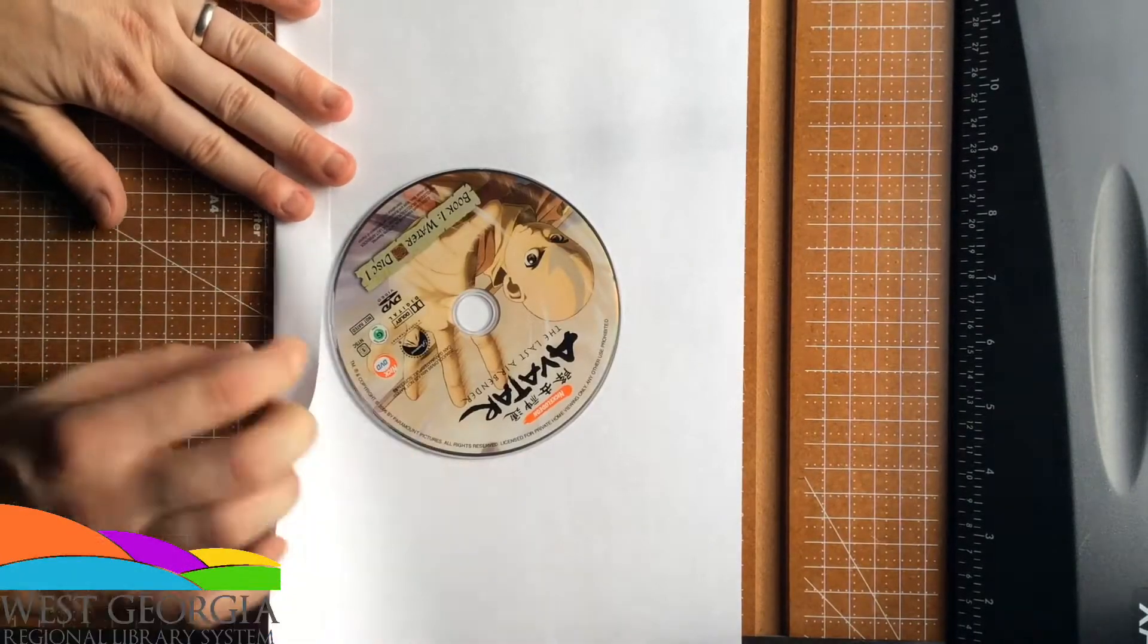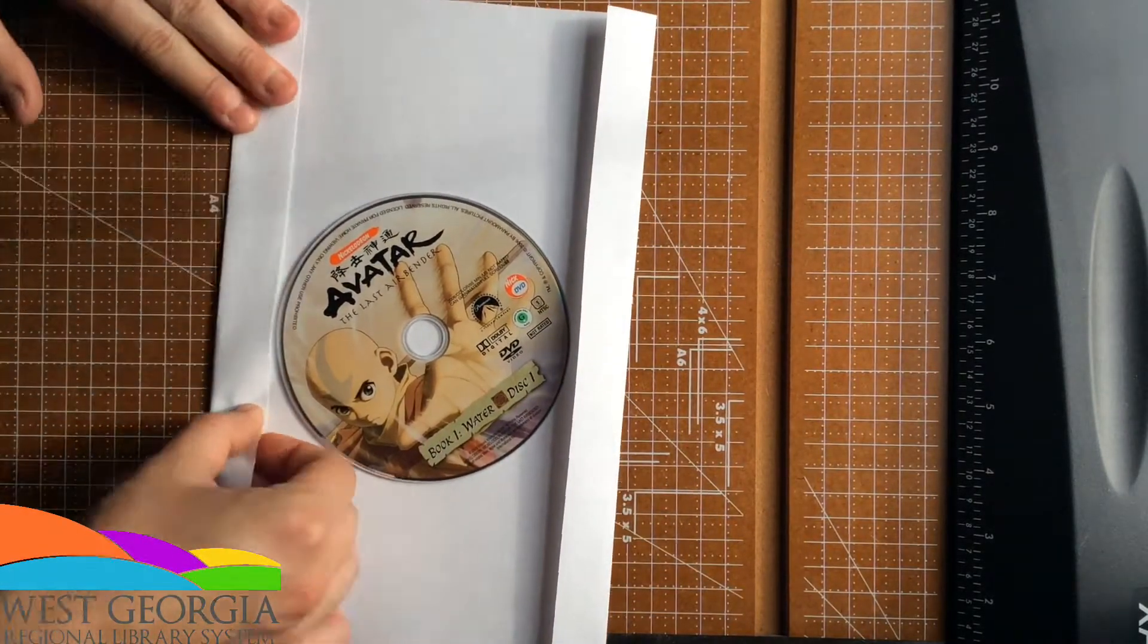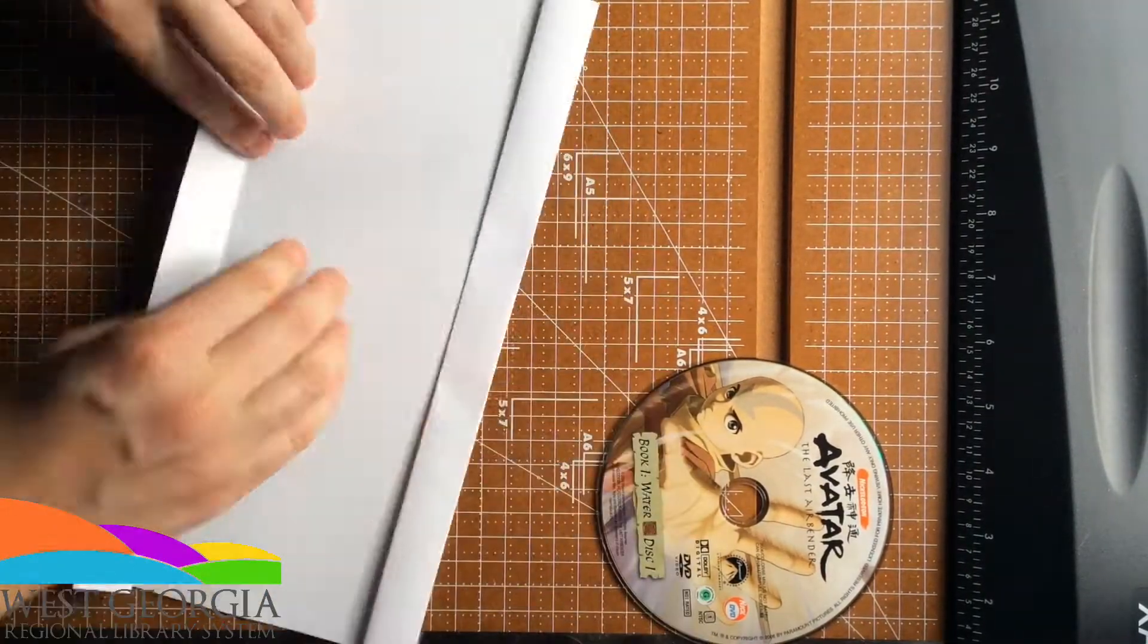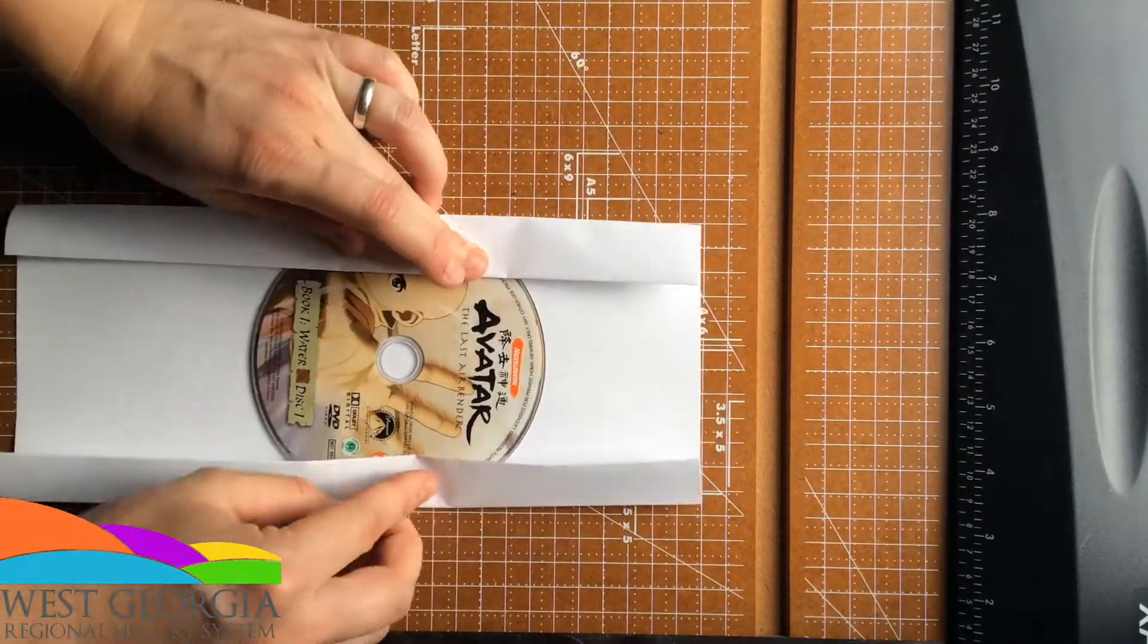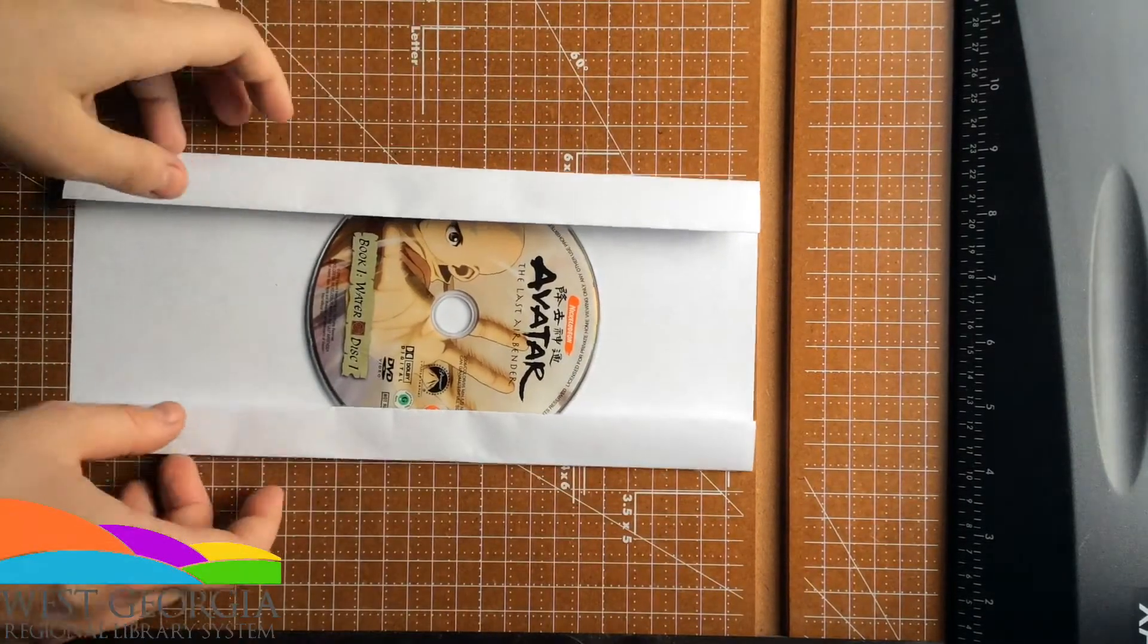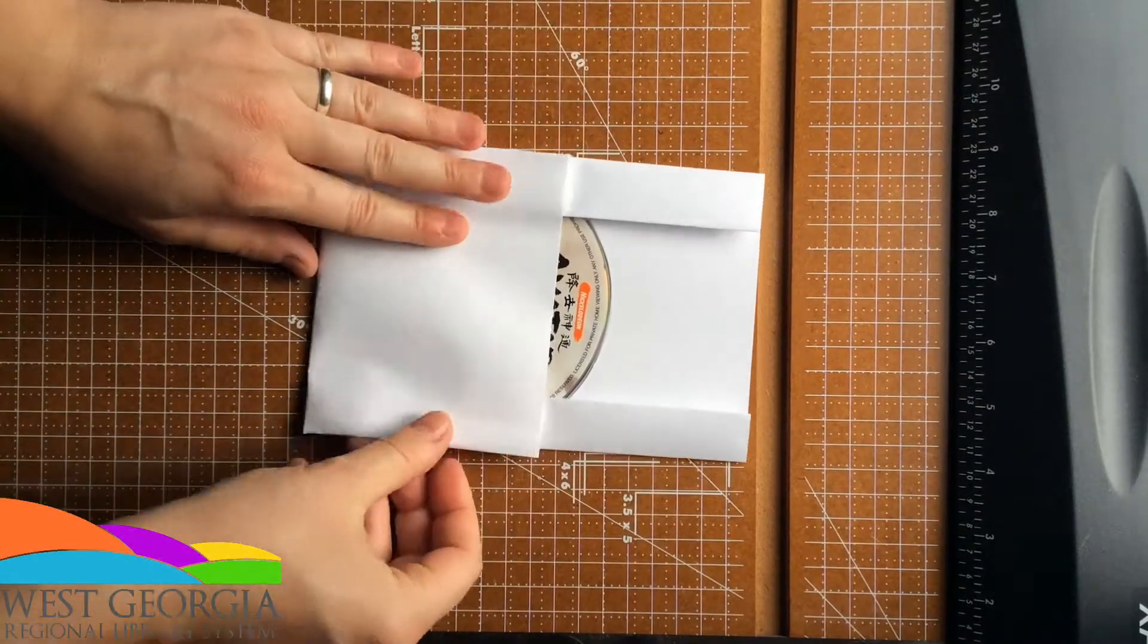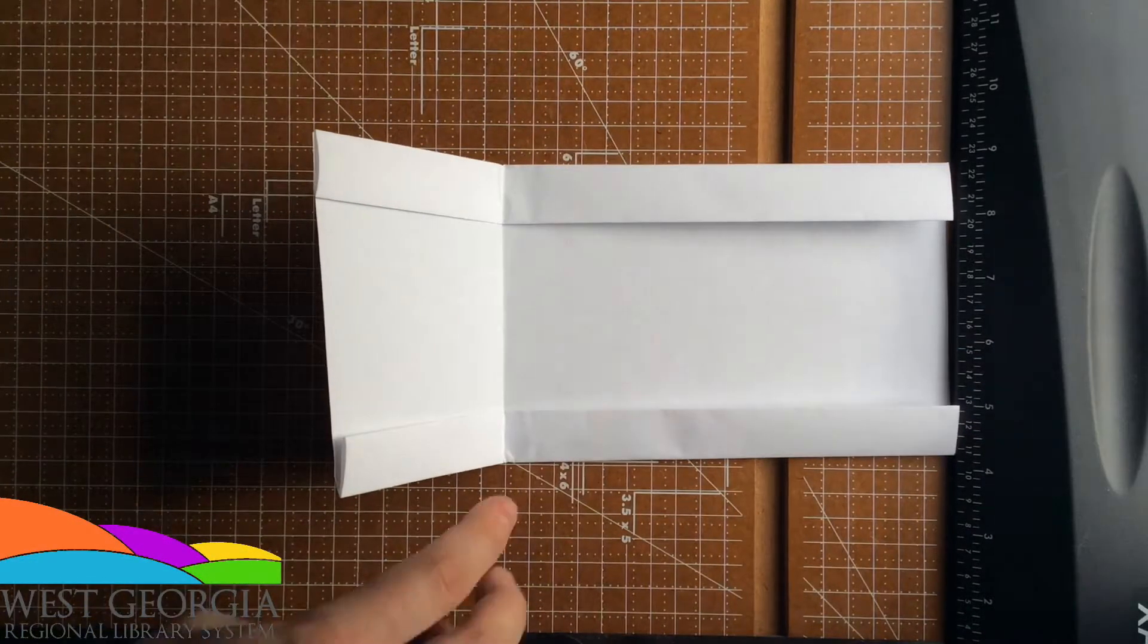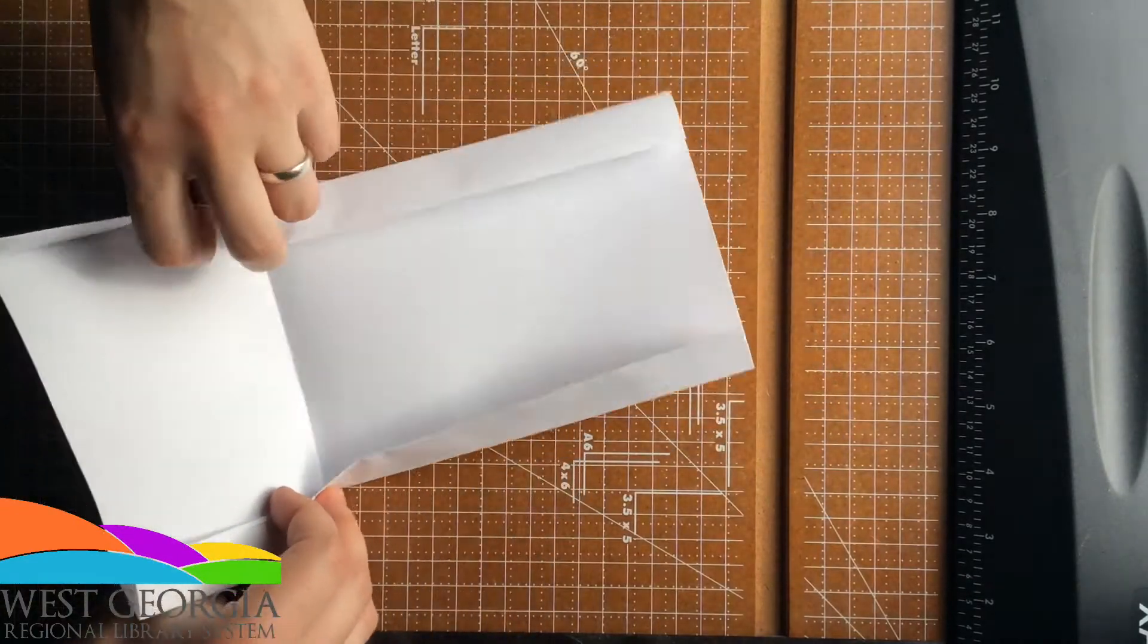Fold it slowly. You want these straight. Go to the other side and do the same, creating a pocket that your disc will go into. Fold up. Fold these out on both sides.